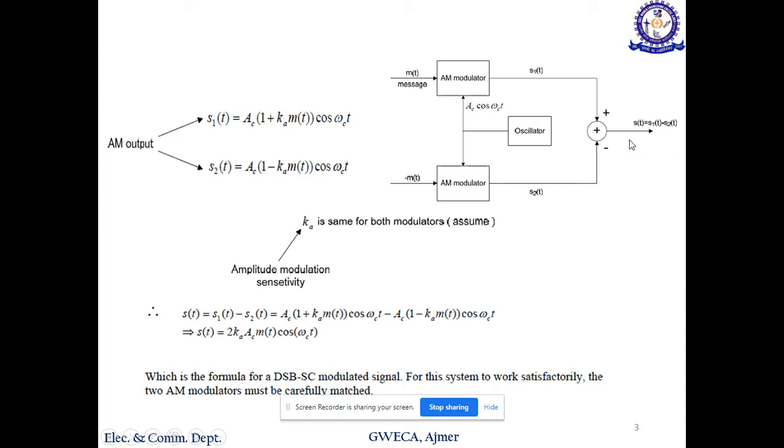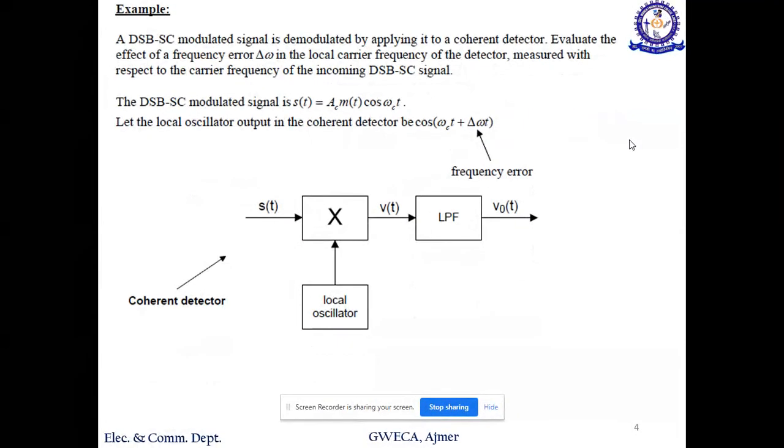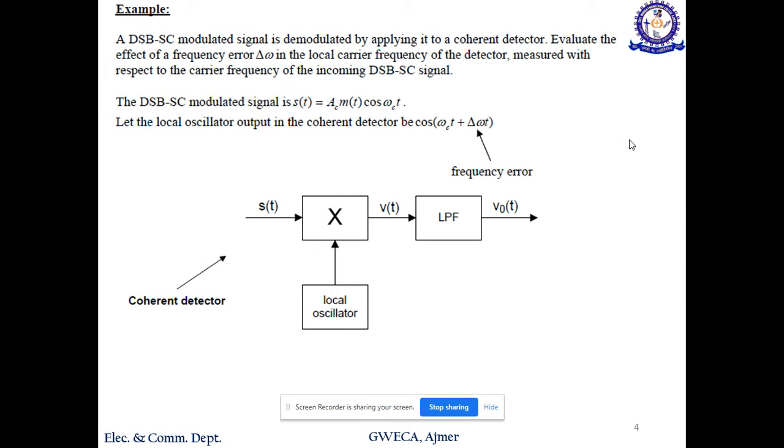The second question: the input is given to a multiplier, then this is a local oscillator, this output is passed through a low-pass filter, and output is Vo(t). We have to prove the role of the frequency error. What is the role of the frequency error?